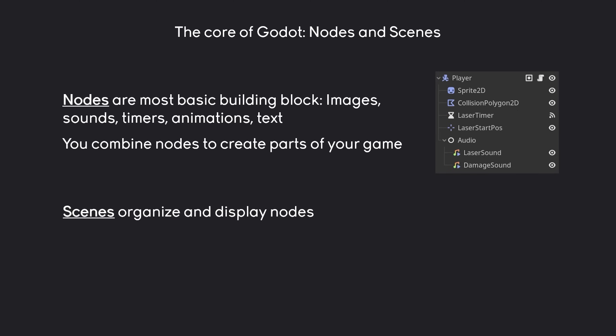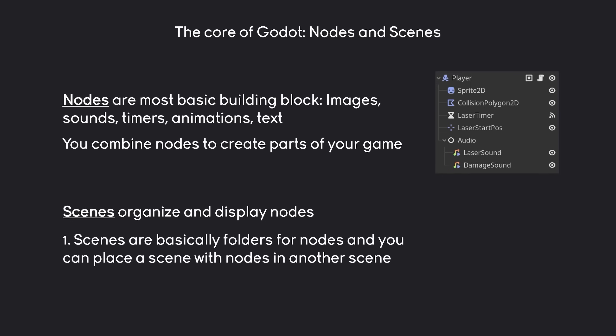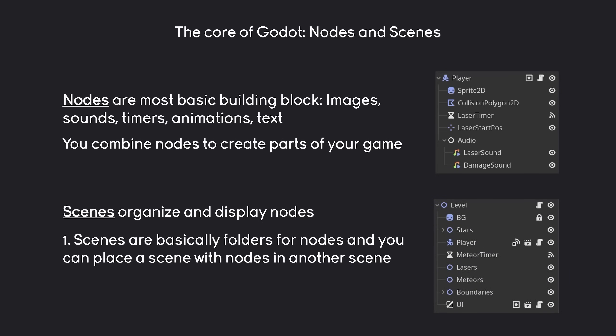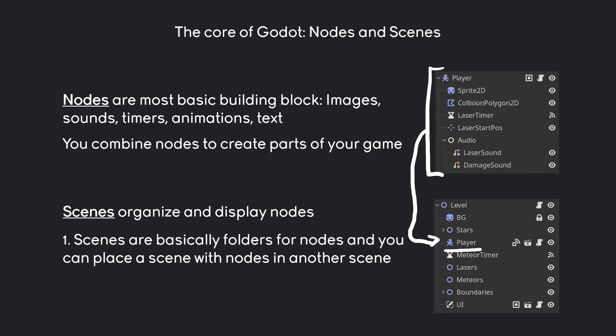First of all we also have to cover scenes, and those do two things — they organize and display nodes. Scenes organize nodes by basically being a folder for nodes, and you can place a scene with nodes into another scene. This is going to be the main setup of our game, where we have the player, the lasers, the meteors, a couple of boundaries, and the UI. What is really important to understand is that the player is simply the entirety of all of those nodes in one scene, then placed into another scene.